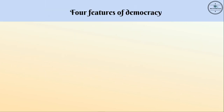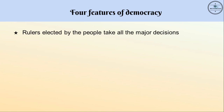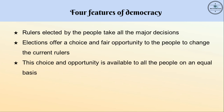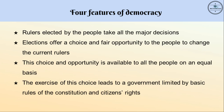Here is the fourth and final feature of democracy: a democratic government rules within limits set by constitutional law and citizens' rights. To summarize, the four features of democracy are: rulers elected by the people take all major decisions; elections offer a choice and fair opportunity to change current rulers; this choice is available to all people on an equal basis; and the exercise of this choice leads to a government limited by the constitution and citizens' rights.